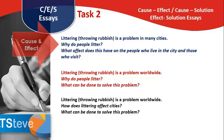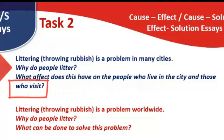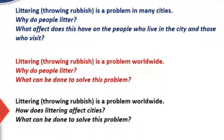The first question is about why and how it affects, so this is a cause and effect question — notice it mentions people who live in the city and those who visit, so there are two parts to the effect question. In the red writing in the middle, we see a cause and solution essay, which is about the future — what can be done, note that uses future tense. Finally, the last one is a combination of the two, covering how it's affecting cities and then how we can solve it.